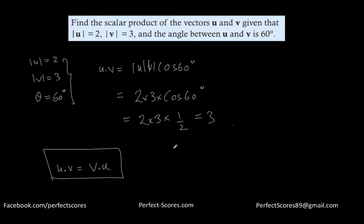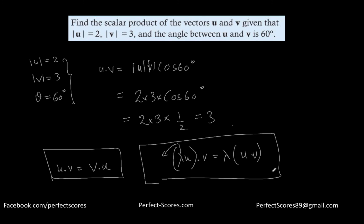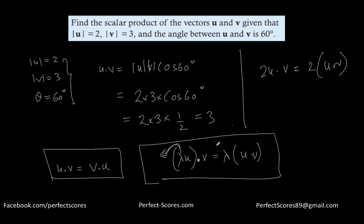Another property: if you have a scalar multiple, lambda·u·v equals lambda times (u·v). You can take the scalar multiple out and first find the dot product, then multiply. For example, 2u·v = 2·(u·v).